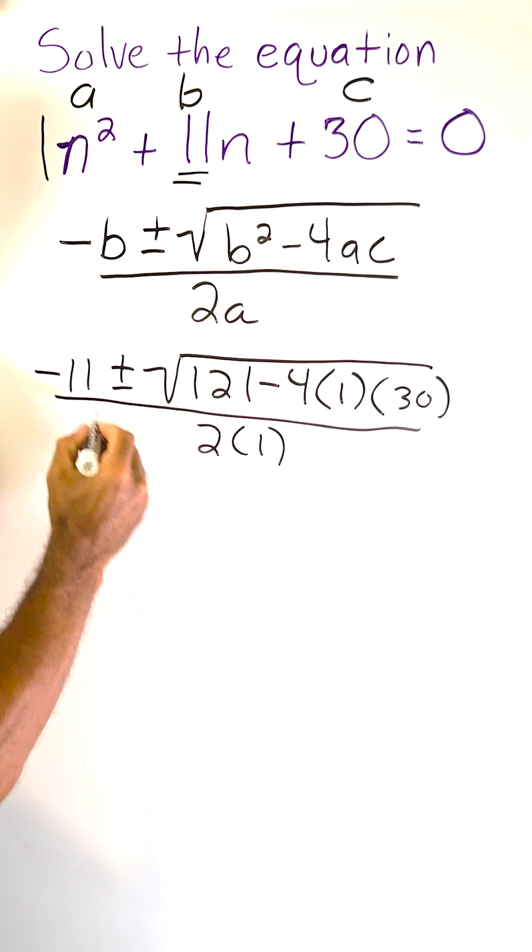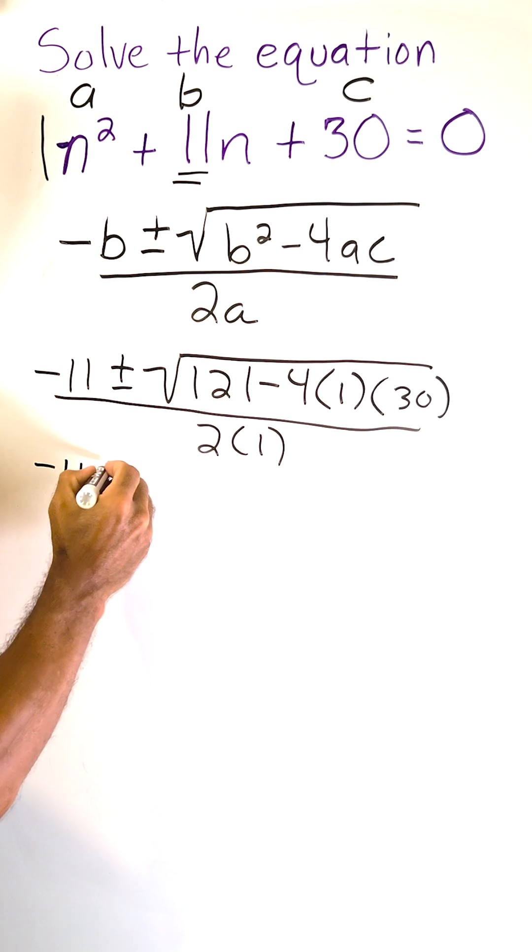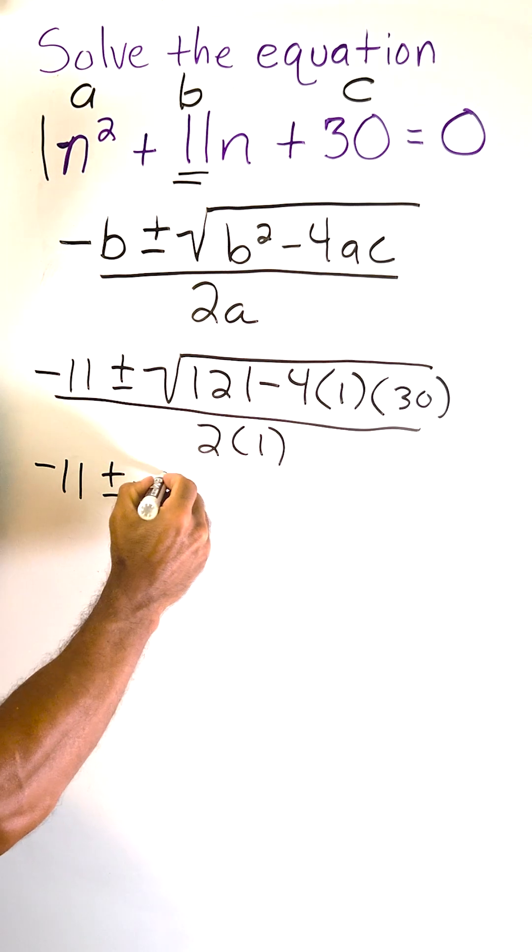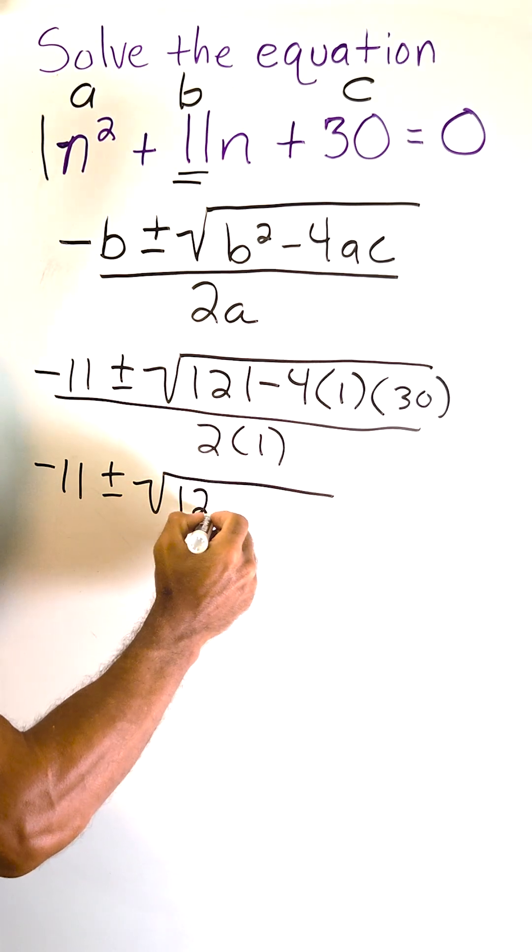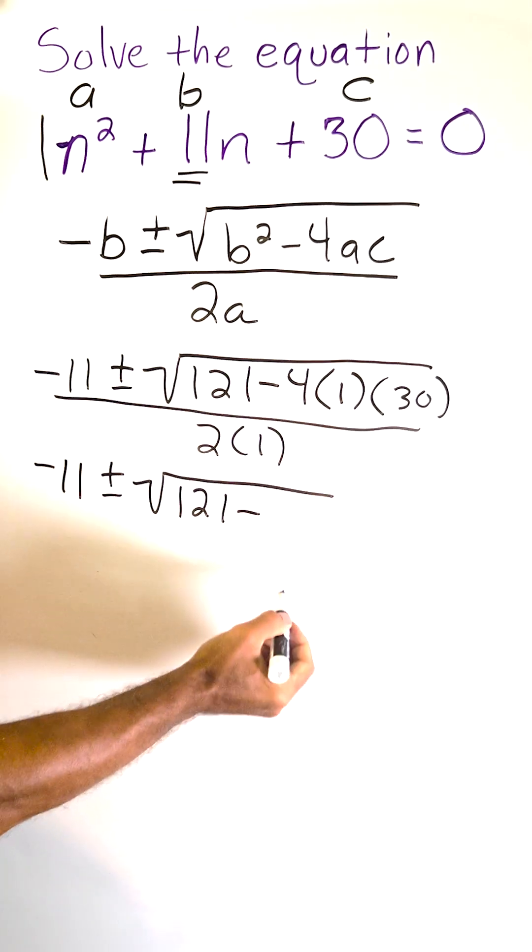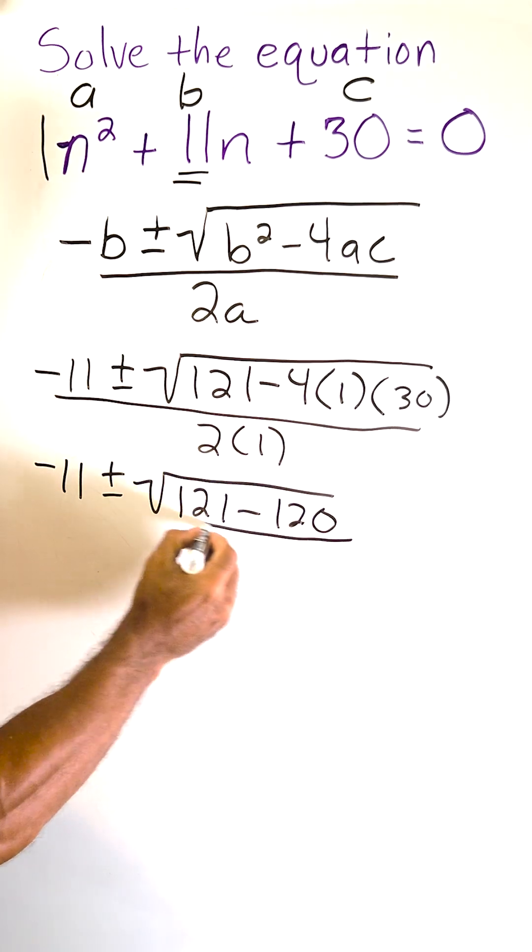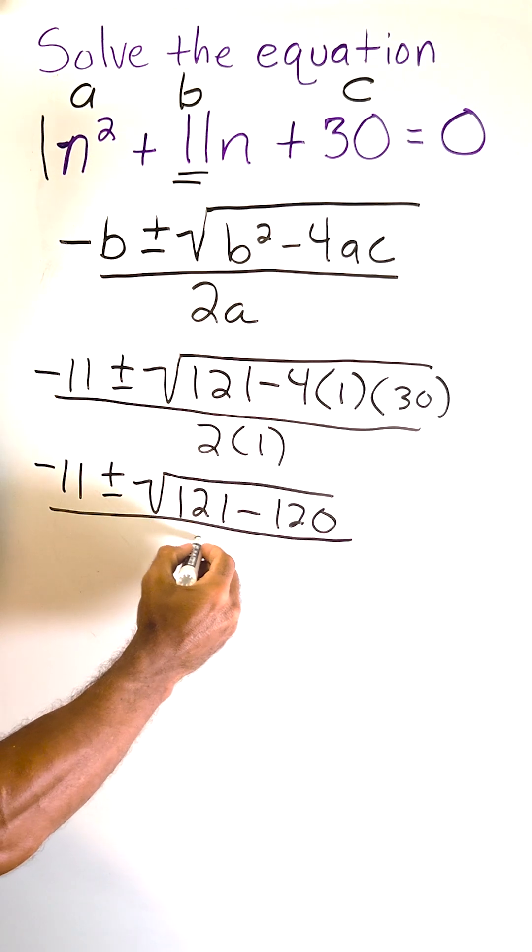Let's go ahead and simplify this equation a bit. We have negative 11 plus or minus the square root of 121 minus the product of these three numbers, which is 120 divided by 2 times 1, which is 2.